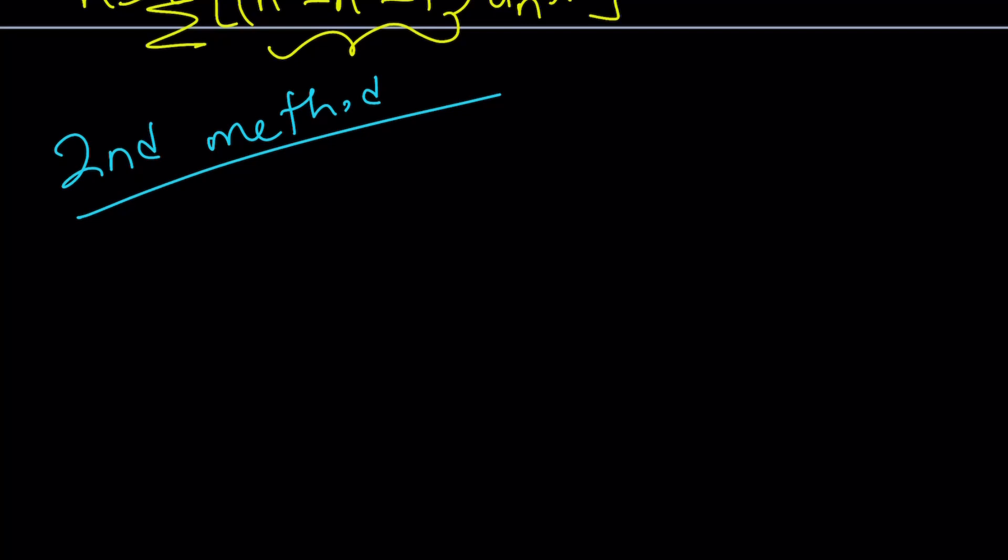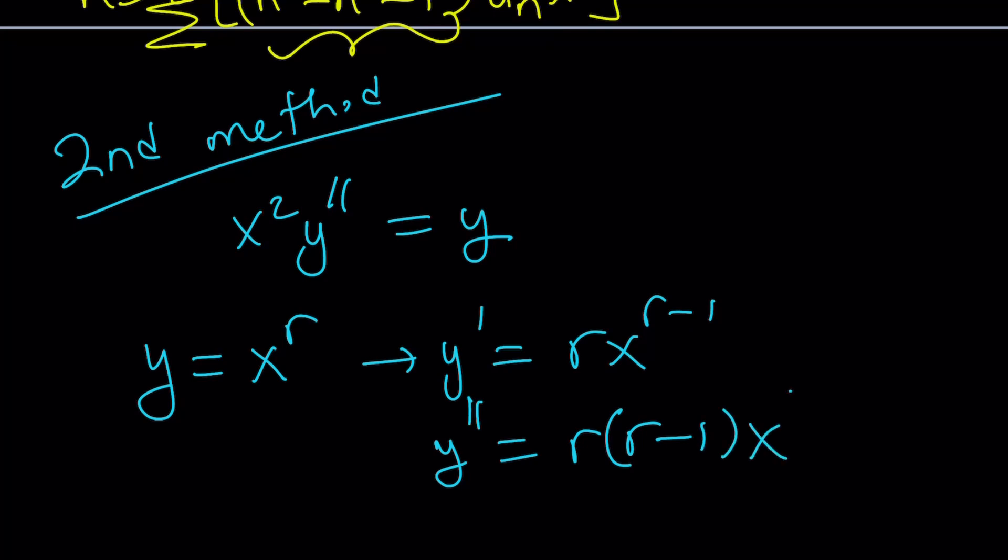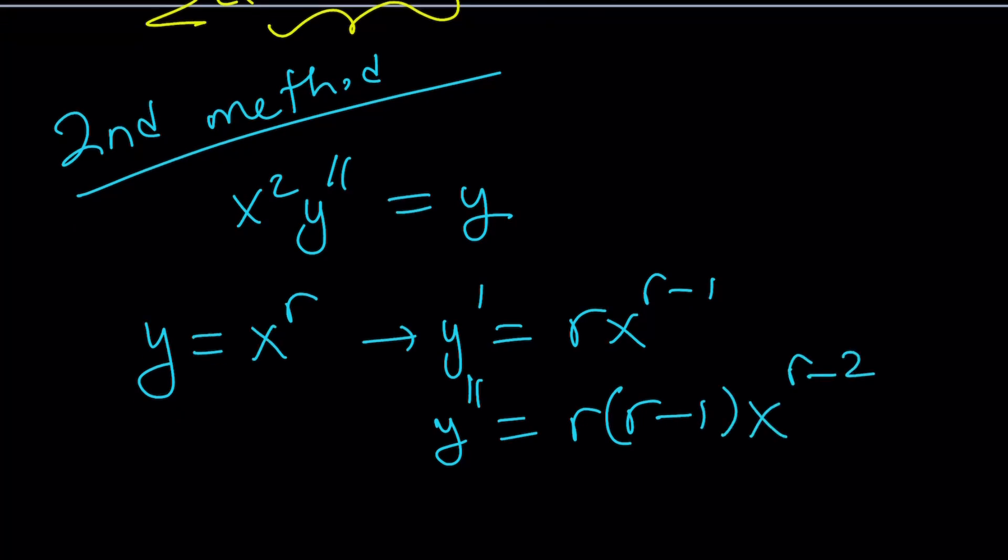Remember, I told you that the degrees are matching up. So, here's what we're going to do. We're going to assume that y can be written as x to the power r, where r is the root of the characteristic equation, which we're going to get in a little bit. Differentiate it once. You get r, x to the power r minus 1. That's kind of similar to power series, isn't it? And then, the second derivative is going to be r times r minus 1, x to the power r minus 2.